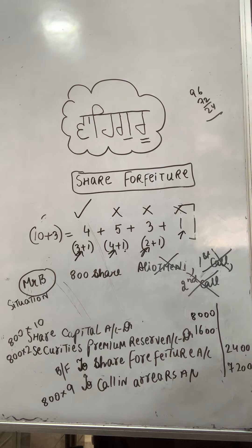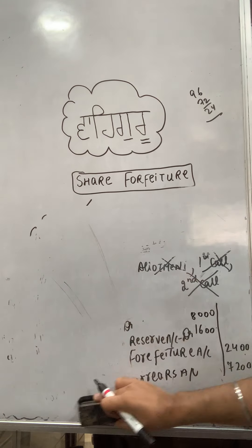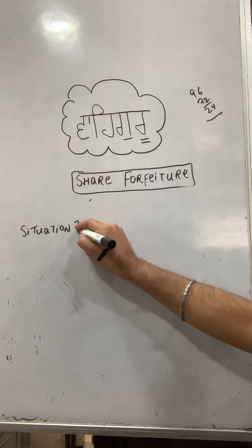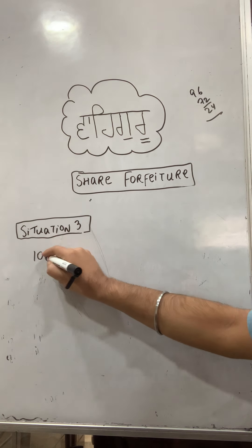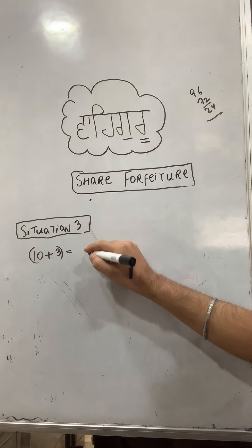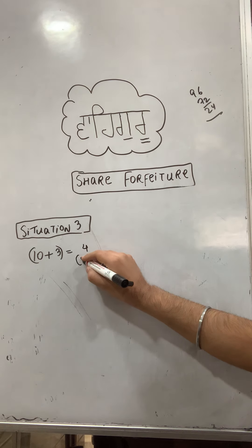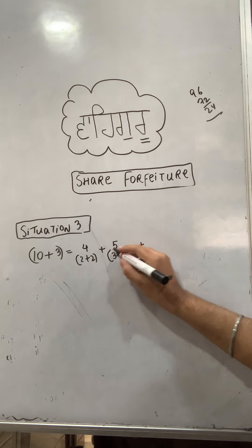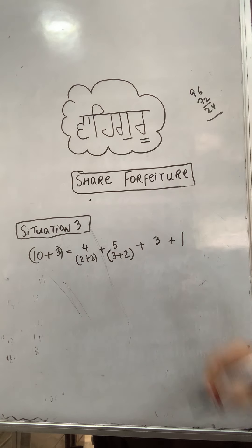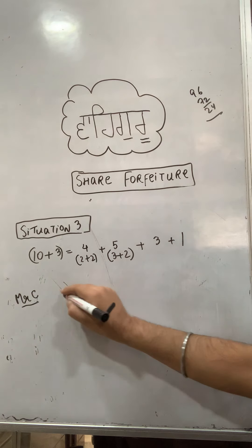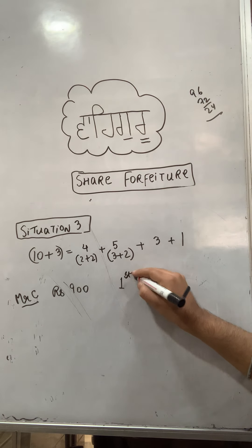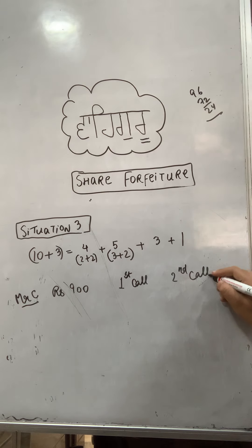Now Situation 3: Mr. C holds 900 shares of Reliance Industries Limited. The share structure is: 3 rupee premium, application money 4 (2 plus 2), allotment money 5 (3 plus 2), and 1 rupee first call and 1 rupee second call. Mr. C did not pay the first call and second call. The company cancelled his shares.